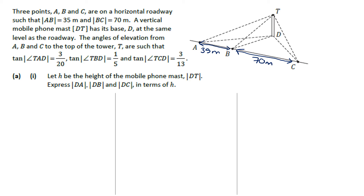The angles of elevation from A, B and C to the top of the tower T are such that tan of angle TAD is 3 over 20, tan of angle TBD is 1 over 5, and tan of angle TCD is 3 over 13. Let H be the height of the mobile phone mast DT and express DA, DB and DC in terms of H.